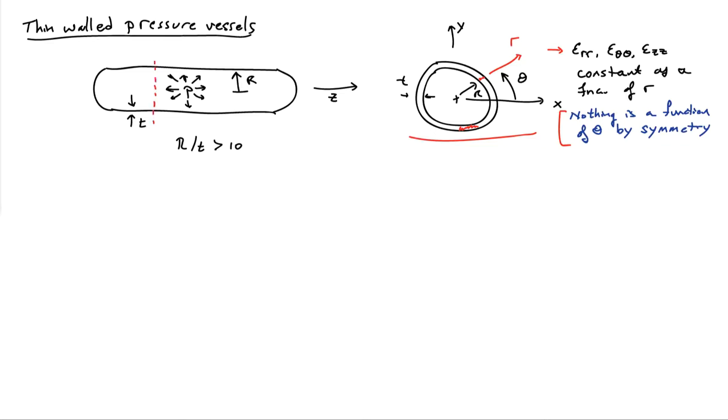And the way I'm going to do this is I'm going to make a section cut first through the vessel, and then look at one end of it. And I'm going to take advantage of my constancy assumption of the strains, which also means that I'm ending up with stresses that are constant across the cross-section.